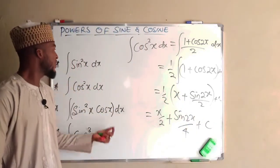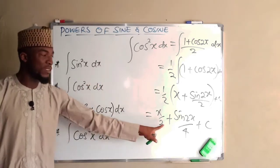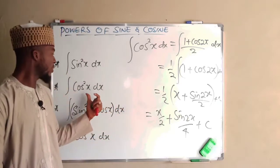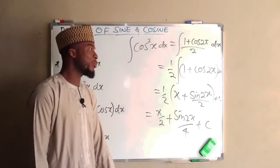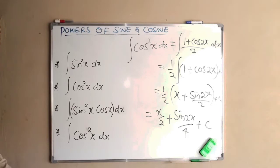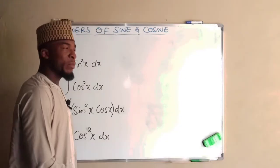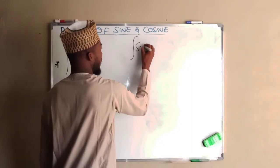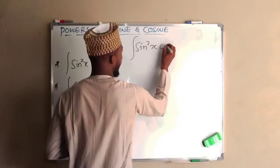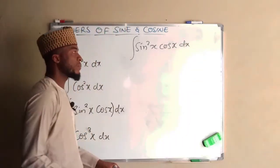This is how to integrate cos squared X. The only difference between the two results is the sign: for sine squared X we have minus, but for cos squared X we have plus. Now let us look at problem number three, which is the integral of sine squared X multiplied by cos X with respect to X.